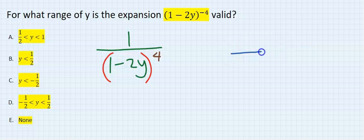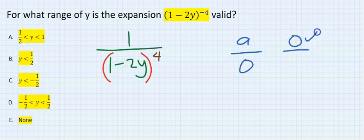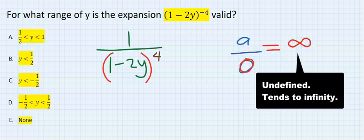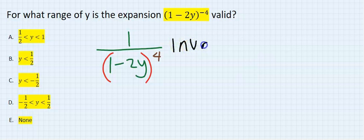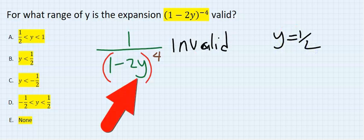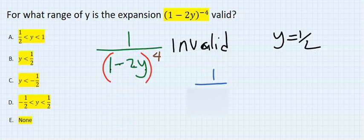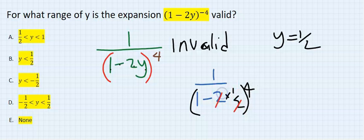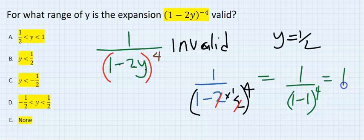Zero is not allowed under any fraction. What is in the numerator can be anything — zero is allowed up there — but zero is not allowed in the denominator. Once you get zero at the denominator of any fraction it becomes undefined. This becomes invalid when y equals one half: substituting that in, one over two minus y becomes one half, so we get one over (2 minus 2) to the power of four.